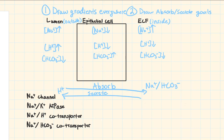We have four transporters to complete those goals, and you can only use each transporter one time — so your final answer can only have four proteins drawn. The strategy is to take each transporter, place it on both sides of the membrane, and see which placement matches our goals. Whichever one does not match our goal, we erase.